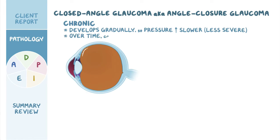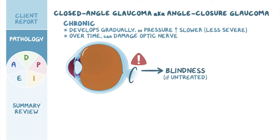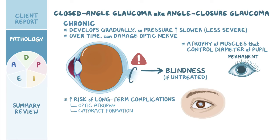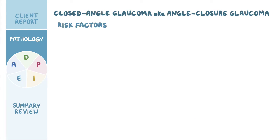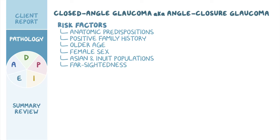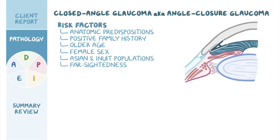Over time, chronic closed angle glaucoma can also cause damage to the optic nerve and result in blindness if left untreated. Individuals with chronic glaucoma have a higher risk of long-term complications such as optic atrophy and cataract formation, or clouding of the lens. Chronic closed angle glaucoma can also cause atrophy of muscles that control the diameter of the pupil, leading to permanent dilation. Risk factors include anatomic predispositions, positive family history, older age, female sex, and glaucoma is more common in Asian and Inuit populations. Individuals with far-sightedness have a higher risk because their angle between the cornea and iris is smaller.